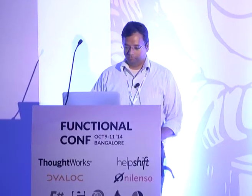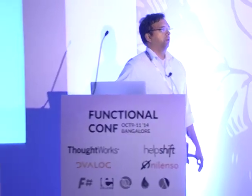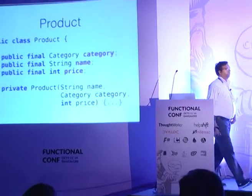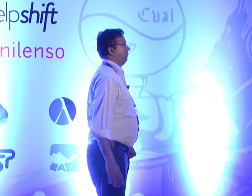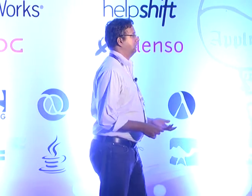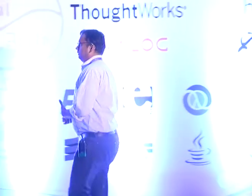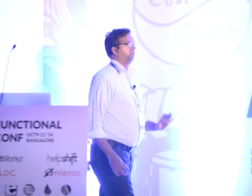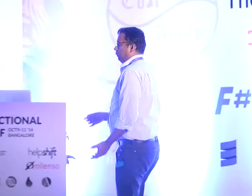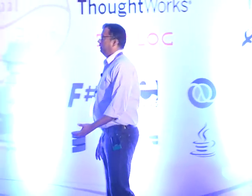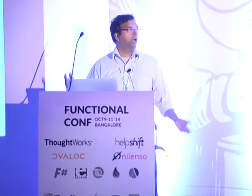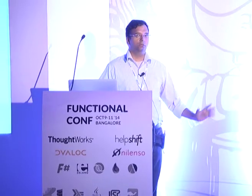Let's introduce the problem itself. We're looking at a domain object called Product - it has a category, a name, and a price. Then we have Item, which is a product but also has a quantity associated with it. You store Items in a Warehouse, which basically has a set of items. We will try to build features around these domain objects.